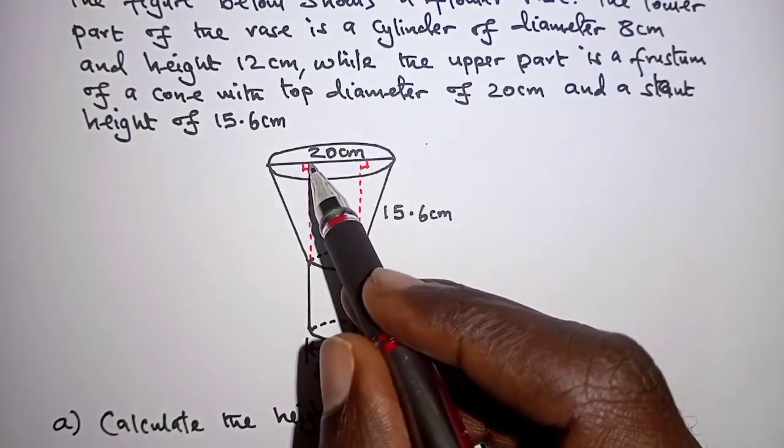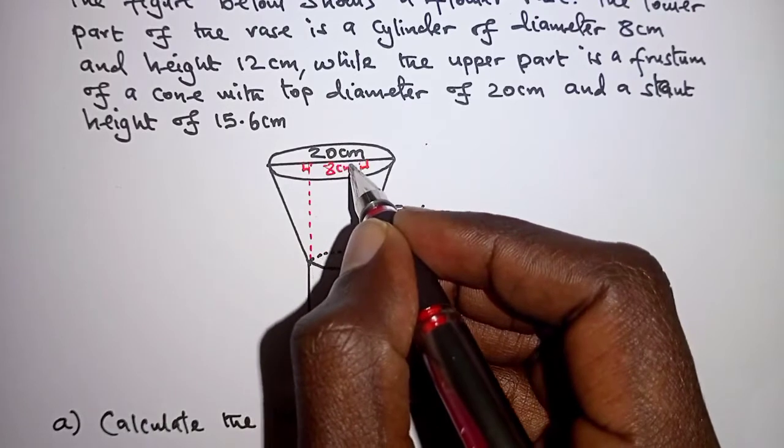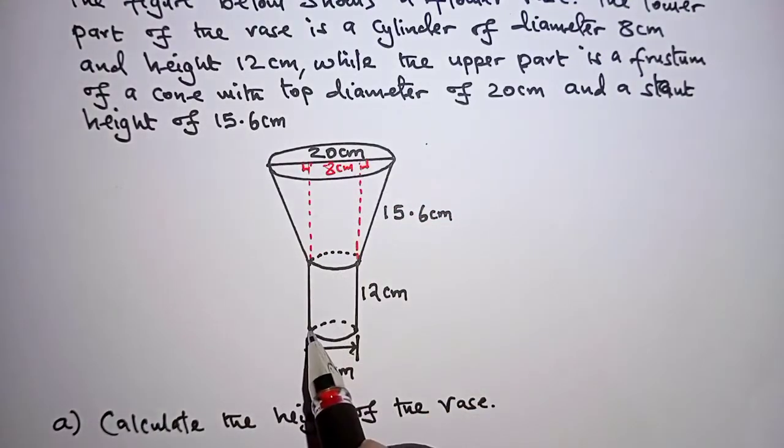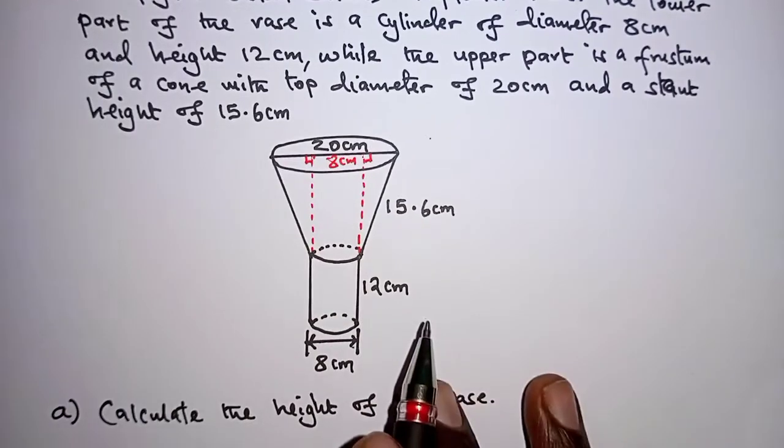the distance from this point to this point should be 8 cm, which is the diameter of the cylindrical part. Now,